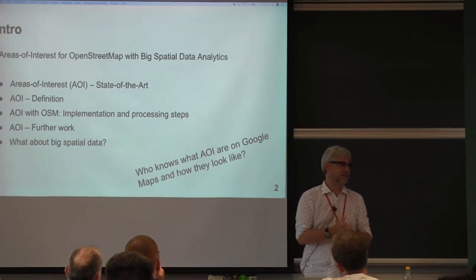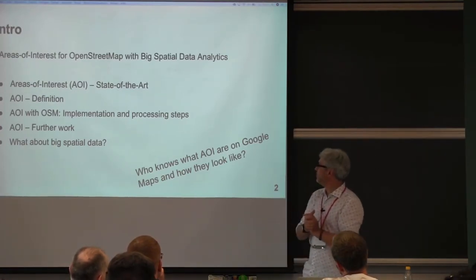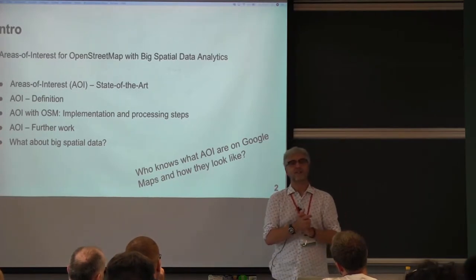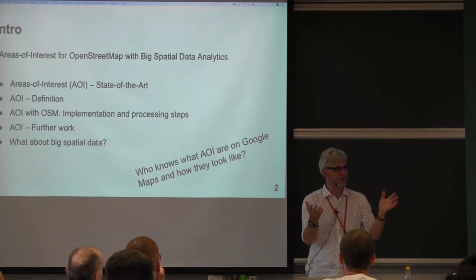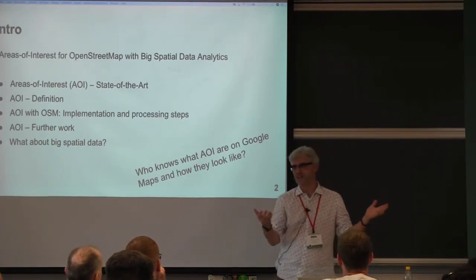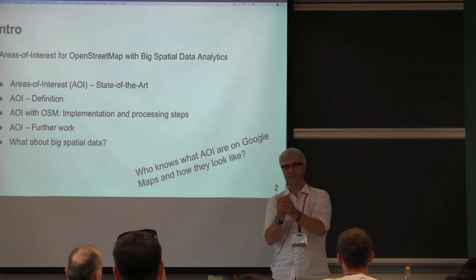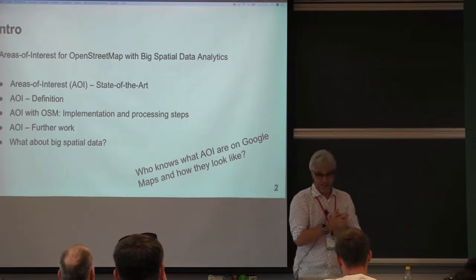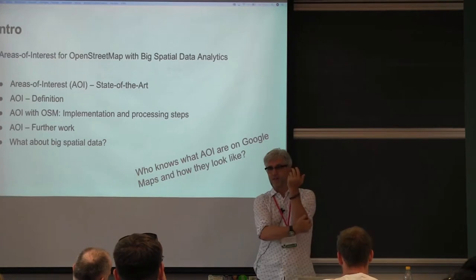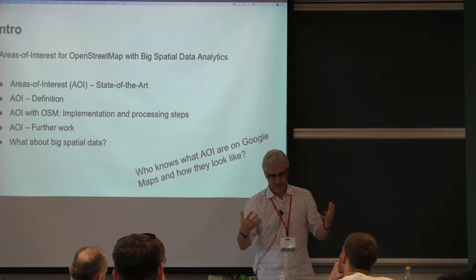First of all, I want to ask everybody: who knows areas of interest on Google Maps? Just to make a proof — how are they shown on the map, on the mobile? What's the color? Yellow. They say shaded orange. They say it's very much in the background, and they had a vague definition, but about half a dozen or so know this kind of interesting additional information.